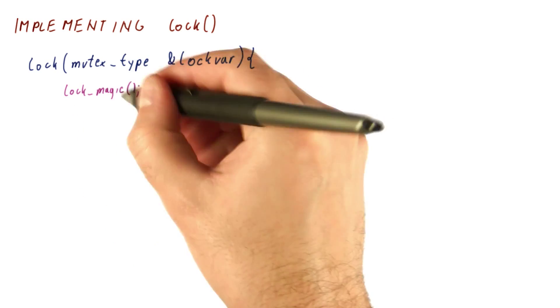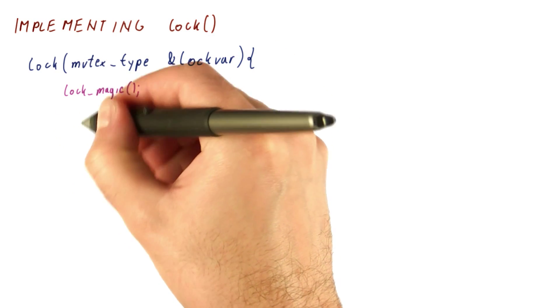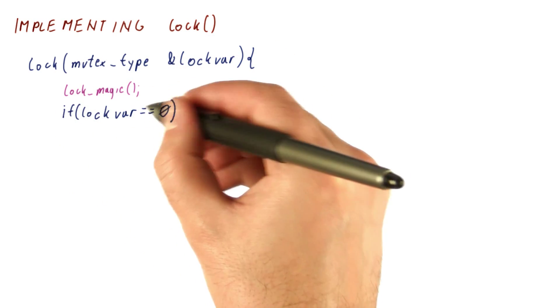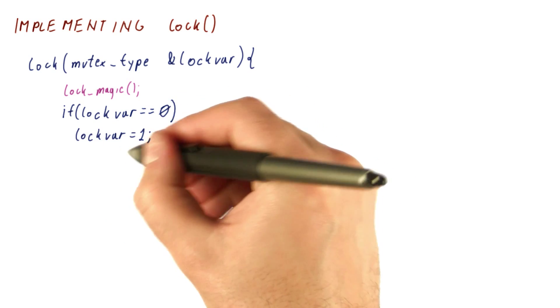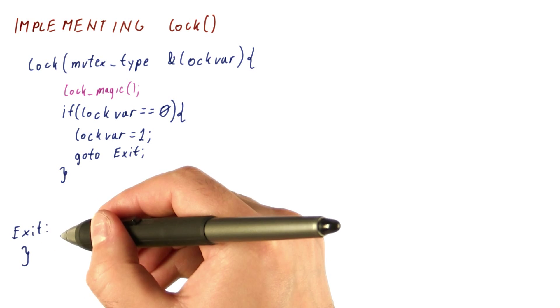We need some sort of a magical lock that works without using locks, that protects a critical section in which we check if the lock variable is zero. We put one in the lock variable, and we leave because we have just successfully acquired the lock.